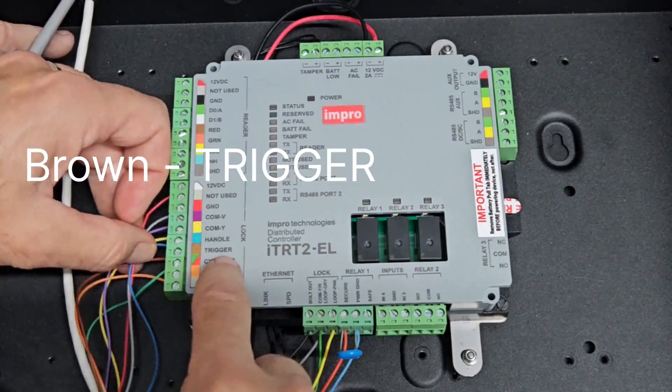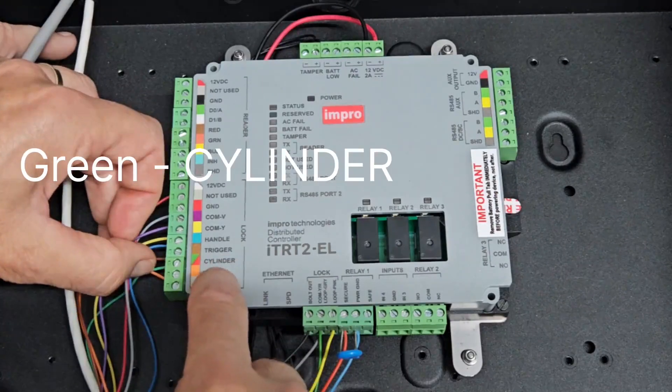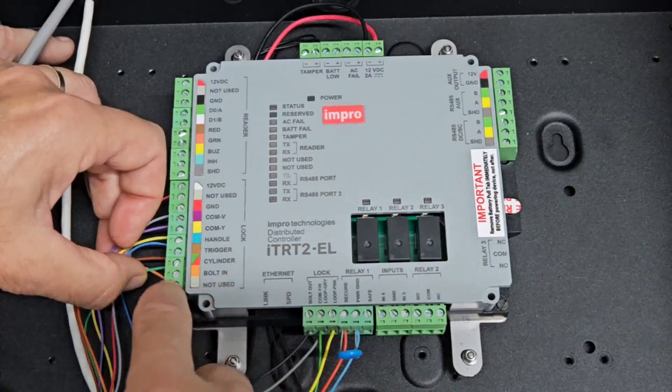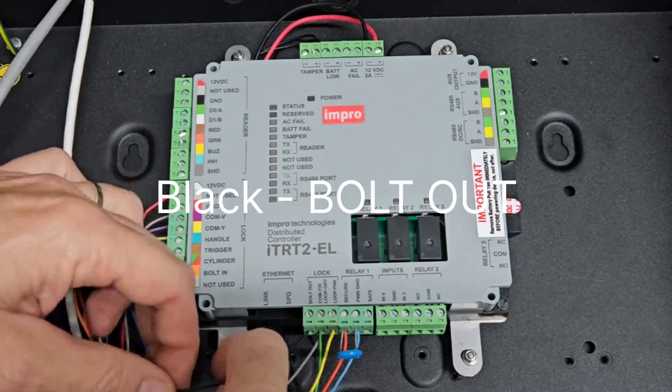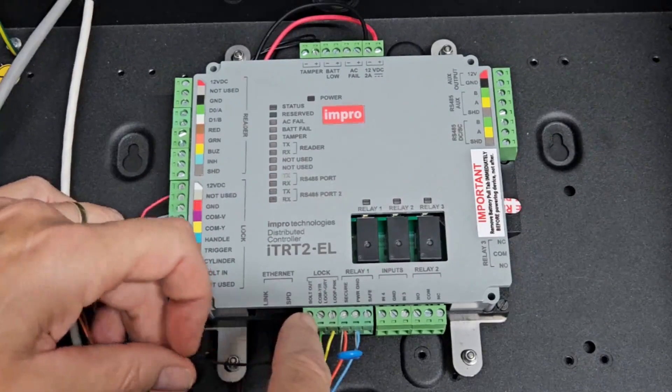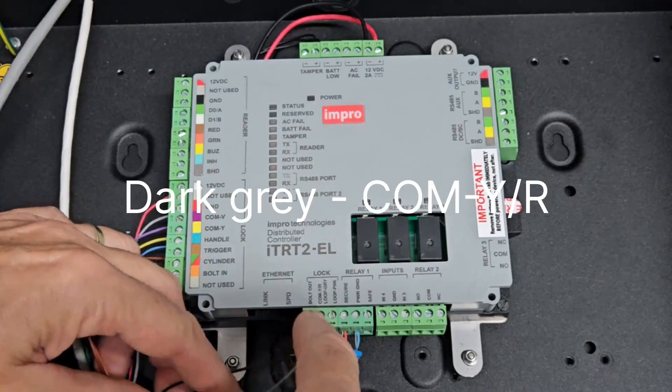Brown into the trigger, green into cylinder, orange into bolt in, the last terminal is not used. Then we have a black wire going into this first lock terminal, dark grey going into the second lock terminal.